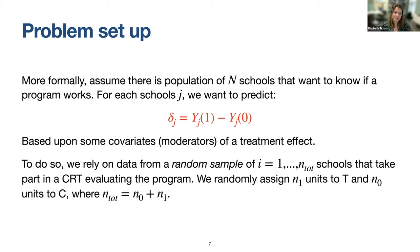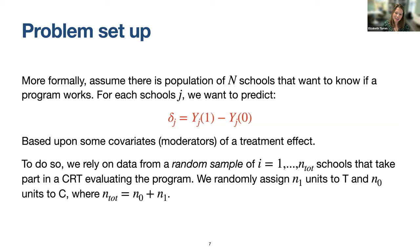More formally, I'm going to assume there's a population of N schools that want to know if a program works, and for each school we want to predict their treatment effect — their Y1 minus Y0 — using some covariates. To do so, we'll rely on data from a random sample of schools that take part in a cluster randomized trial, though you could also think of students as the units. We'll randomly assign units to conditions.